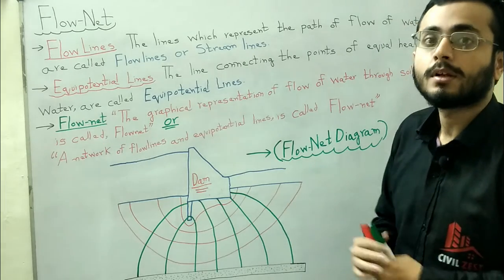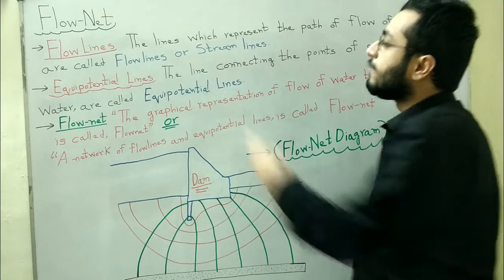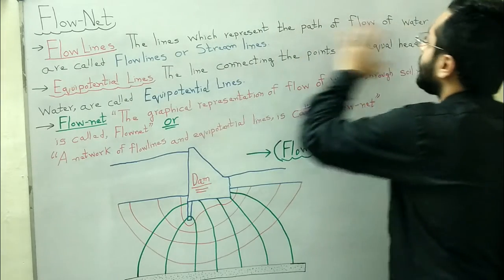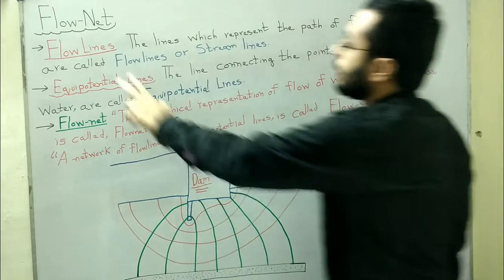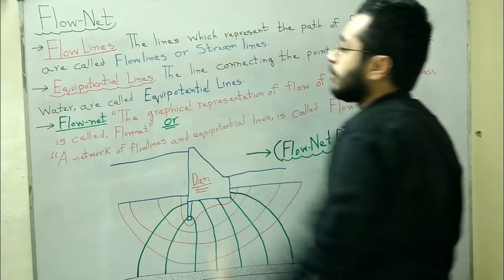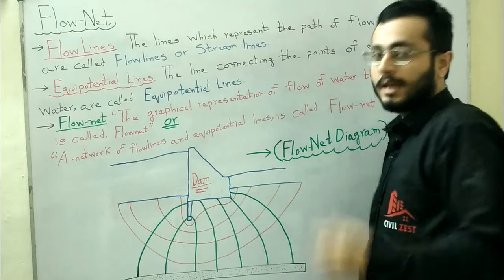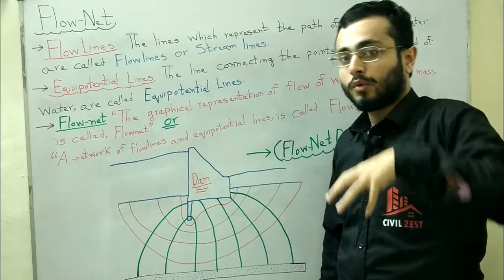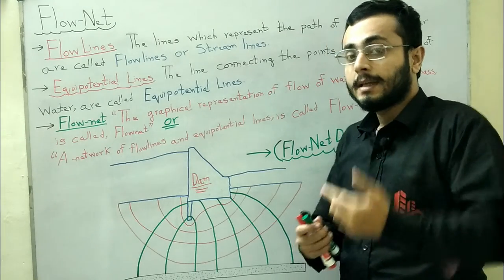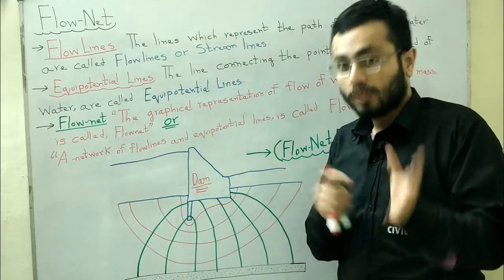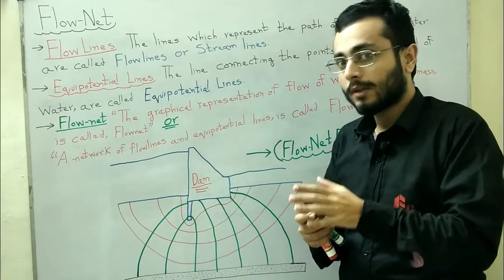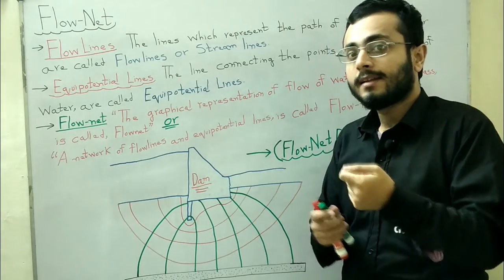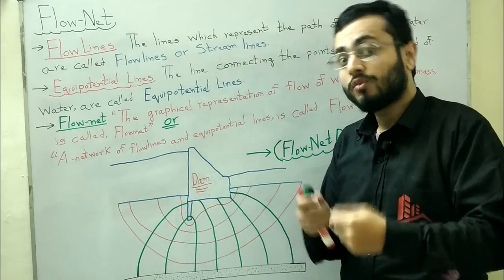Flow lines: the lines which represent the path of flow of water are called flow lines or stream lines. They represent the path of flow — the path which water will follow through the soil.